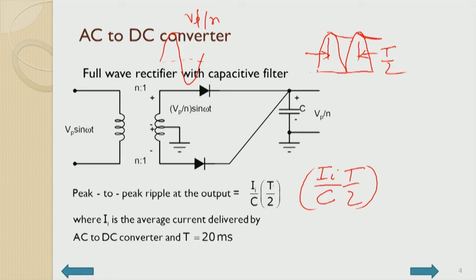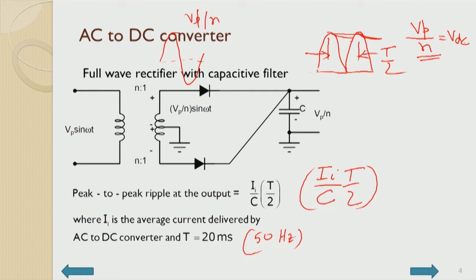Based on the requirement of peak-to-peak ripple, capacitor selection can be done, since T = 20 ms corresponding to 50 Hz. The DC voltage we can approximate as VP/N. The transformer ratio N can be fixed based on the unregulated DC requirement for the input of the regulator, which then feeds the DC regulator.